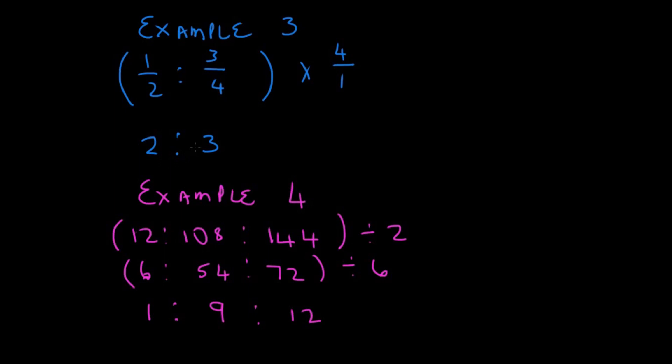Let's look at example 4. We have 12 as to 108 as to 144. And what do we need to do here? We need to find our highest common factor. Now, I broke this up into 2 to show you something. If you don't find the highest number right away, you can continue with the sum by dividing further.